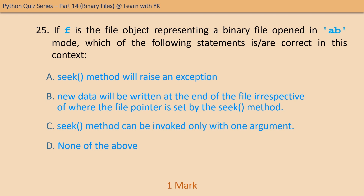Question number twenty-five: if f is the file object representing a binary file opened in ab mode, which of the following statements are correct in this context? There can be one or more correct statements. The correct option is option B only — new data will be written at the end of the file irrespective of where the file pointer is set by the seek method.